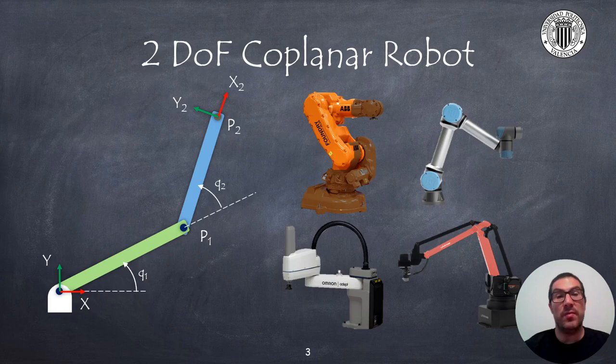The 2 degrees of freedom coplanar robot is a robot that is used in many academic examples to learn kinematics and dynamics. The importance of this robot is that all its elements are contained in the same plane and, therefore, it operates in the 2D space R2-S1, which greatly simplifies all the maths. This coplanar structure appears in many of the real robots. That's why it's an important mechanism to start with.